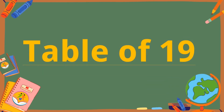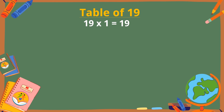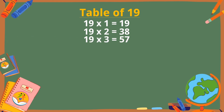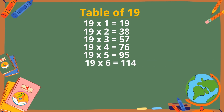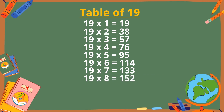Table of 19. 19 ones are 19, 19 twos are 38, 19 threes are 57, 19 fours are 76, 19 fives are 95, 19 sixes are 114, 19 sevens are 133, 19 eights are 152, 19 nines are 171, 19 tens are 190.